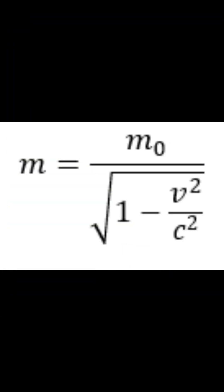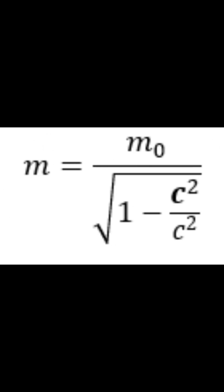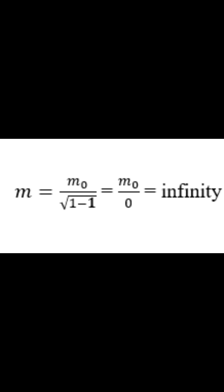The problem is, when you assume an object is moving at the speed of light and you plug it into the equation for relativistic mass, you wind up with a solution where the mass of your object equals infinity.